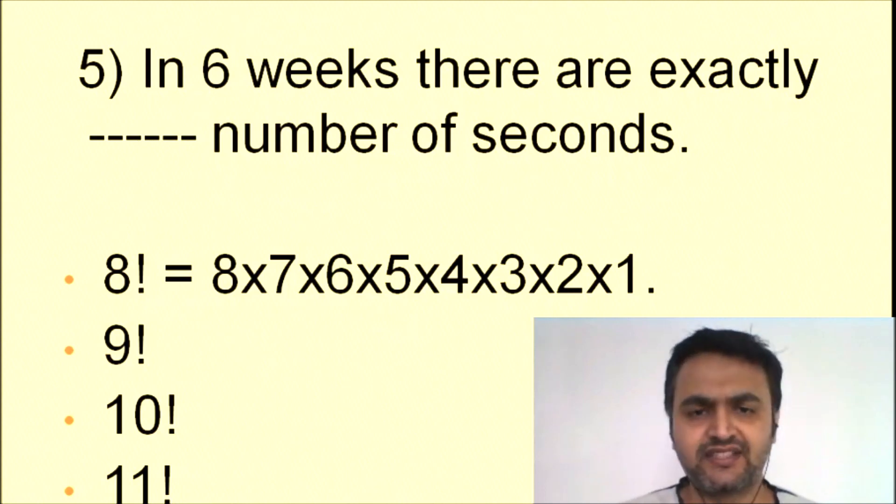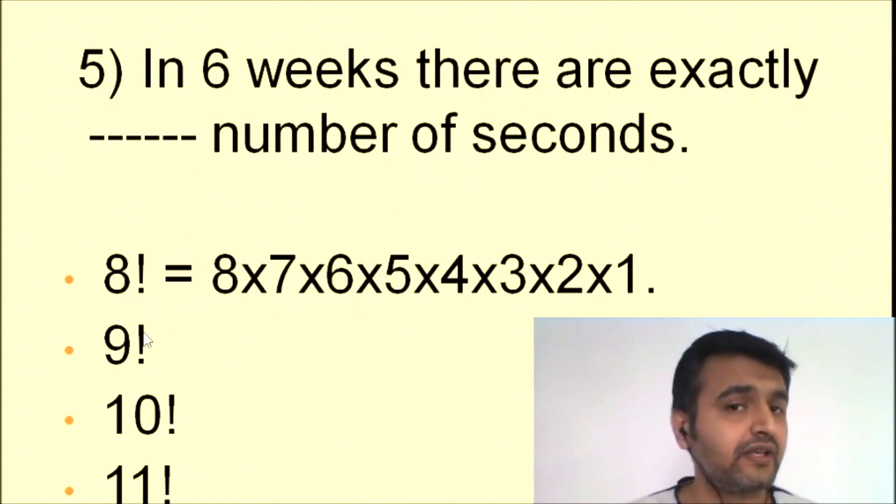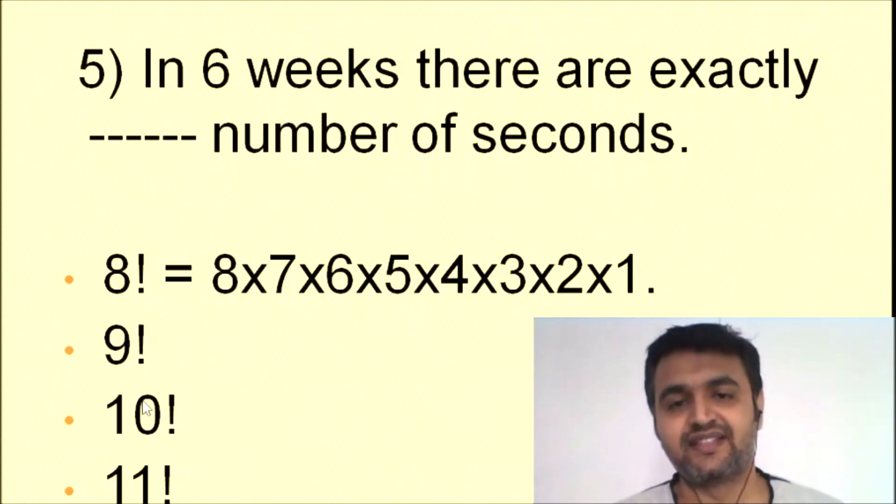Well, I won't tell you this answer. What you do is: six weeks, so 6×7 gives you 42 days, then multiply by 24 hours, 60 minutes, 60 seconds. You get a number from calculator. Calculate 9!, 10!, 11! and comment your answer in the comment section. Comment and then see other comments.